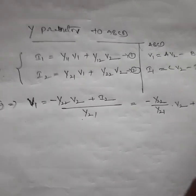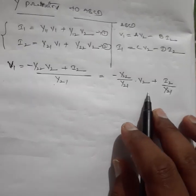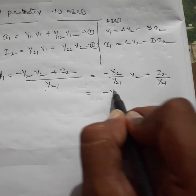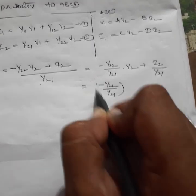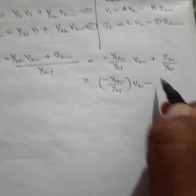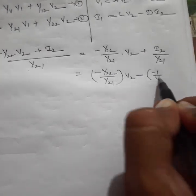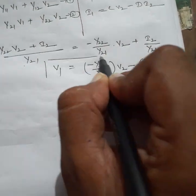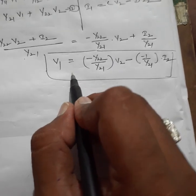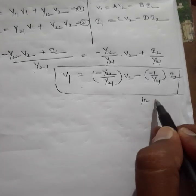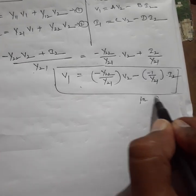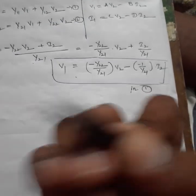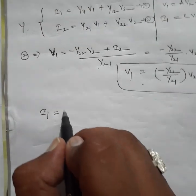So this is the v1 equation: v1 equals minus y22 by y21 into v2, minus 1 by y21 into i2. This v1 equation is substituted into equation one, where i1 equals y11·v1 plus y12·v2.